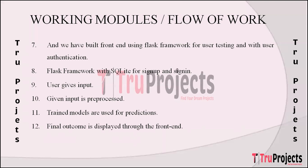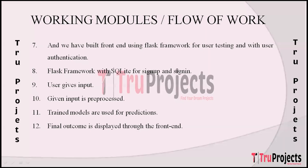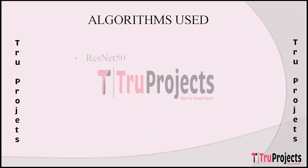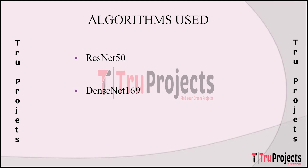The first algorithm used is ResNet-50, a variant of the ResNet architecture that addresses the challenge of training very deep neural networks by introducing residual connections. These connections allow gradients to flow directly through the network, mitigating the vanishing gradient problem. ResNet-50, with its 50 layers, is effective in image classification and chosen for its deep architecture well-suited for medical image analysis and accurate disease diagnosis.